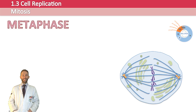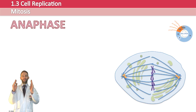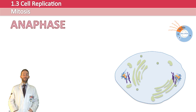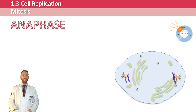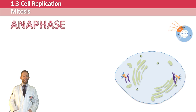In anaphase, the centromeres split — those holding the two chromatids together — and the chromatids get pulled apart. Once that happens, we refer to them as chromosomes again, as they're back to single chromosomes as you'd expect in a normal cell. They get pulled centromere-first towards the opposite poles of the cell by the microtubule fibres contracting, which uses up a lot of ATP that was produced in interphase.